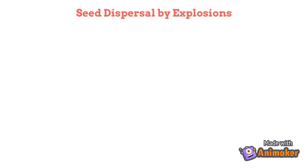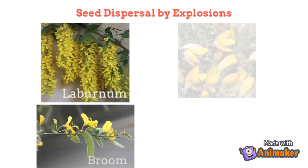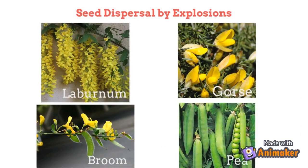Some plants disperse seeds by explosions. Examples include laburnum, broom, gorse, and peas which disperse their own seeds. The pods dry and split open suddenly with some considerable force, which throws their seeds at quite a distance away from parent plant for reproduction.